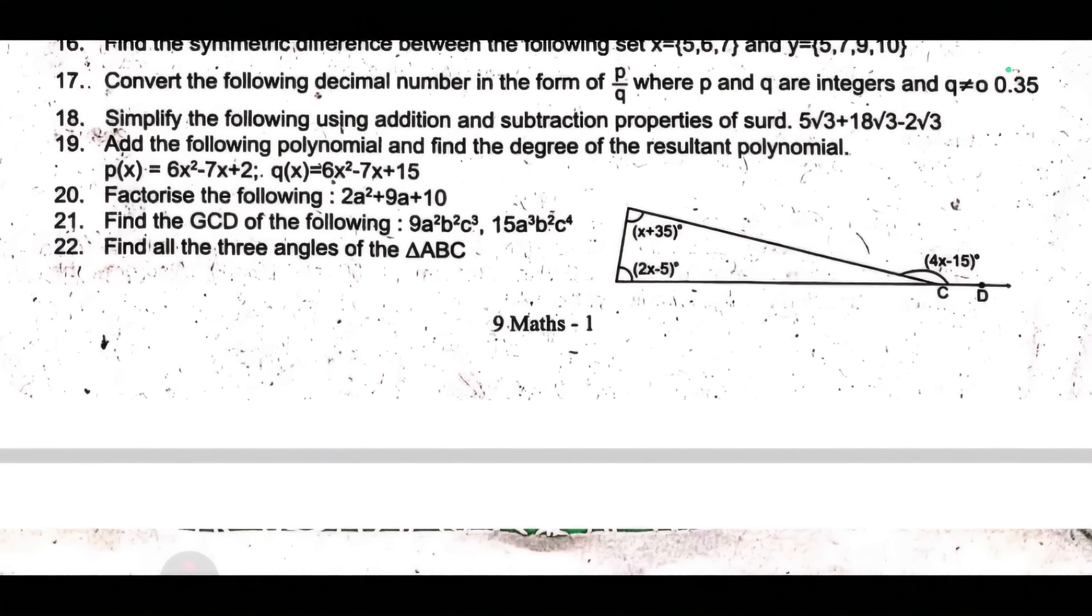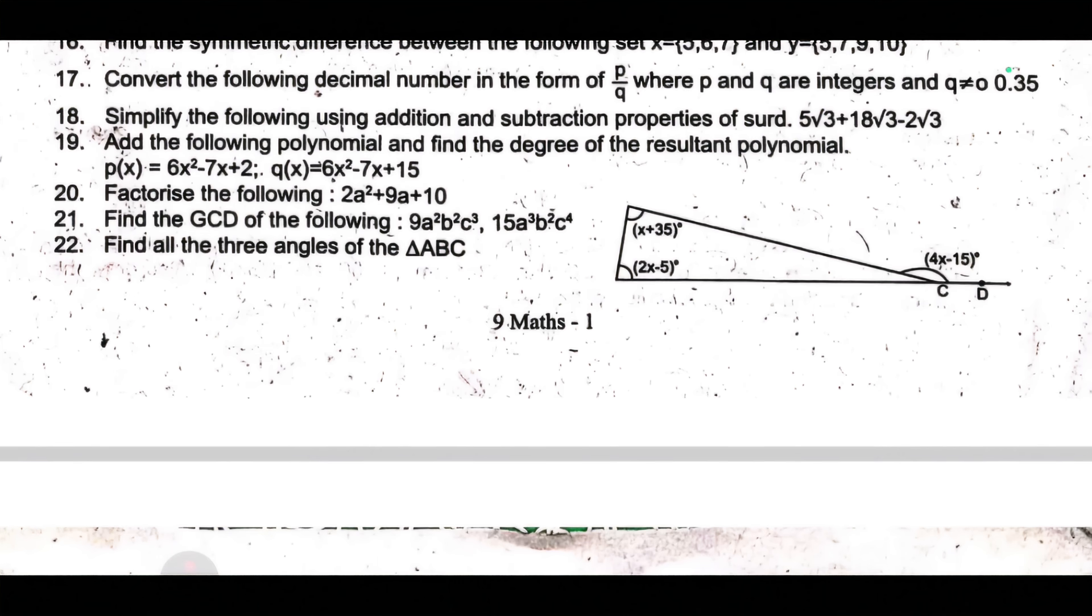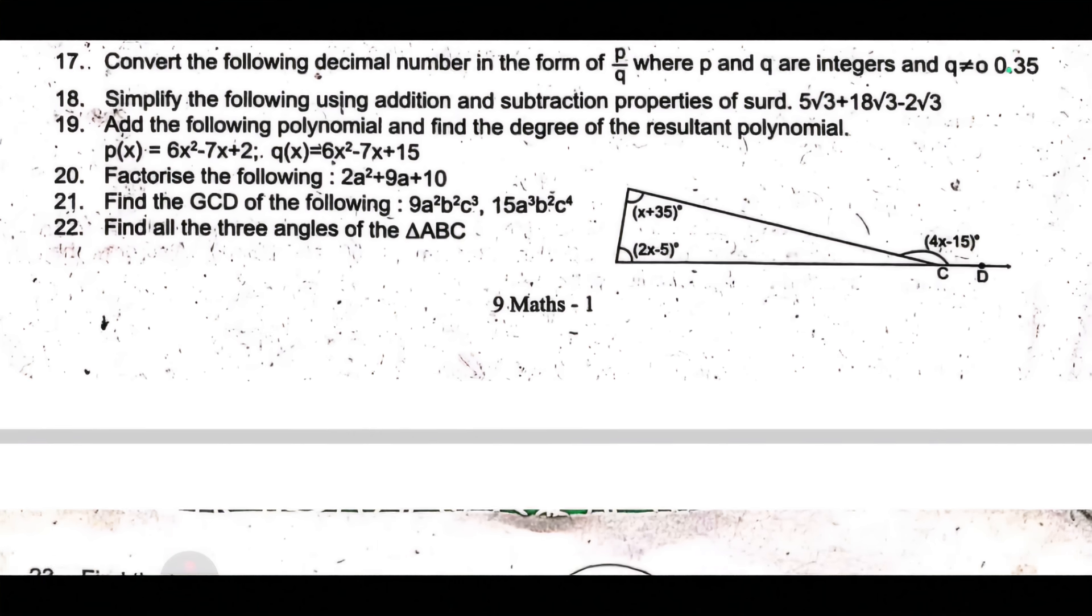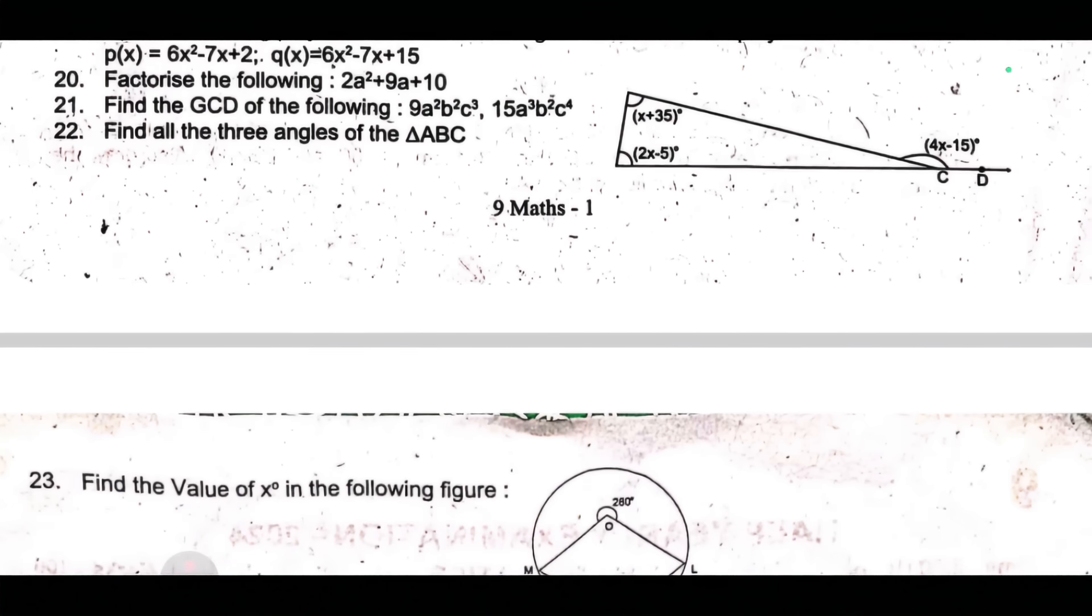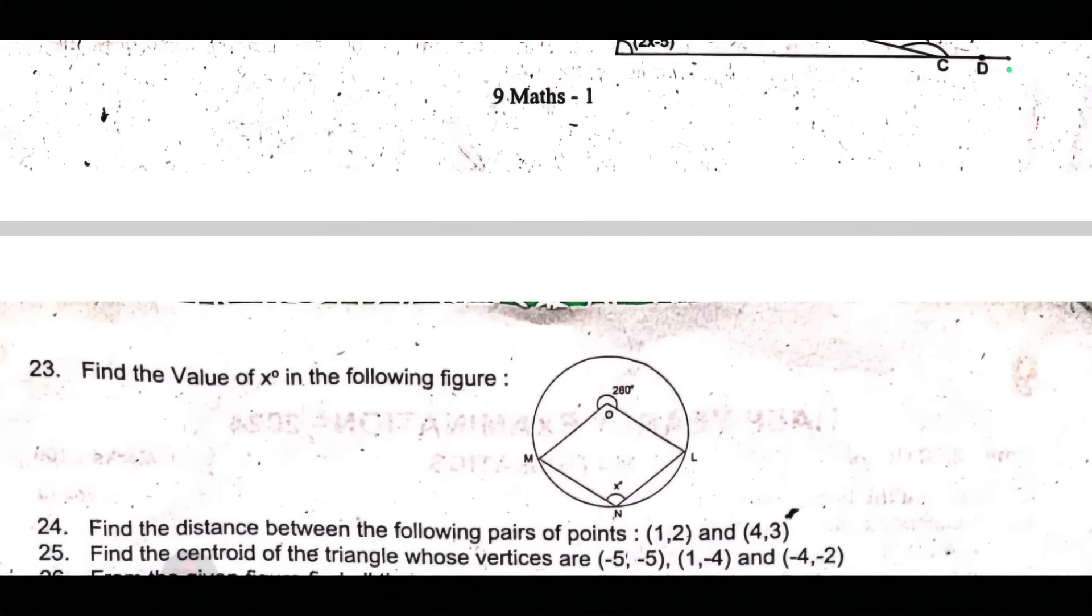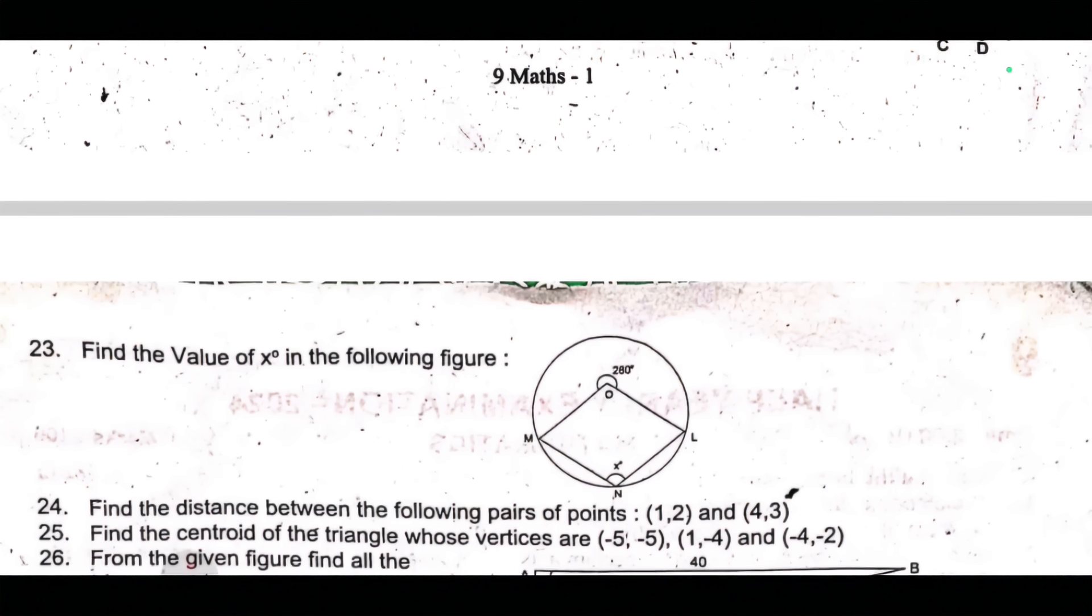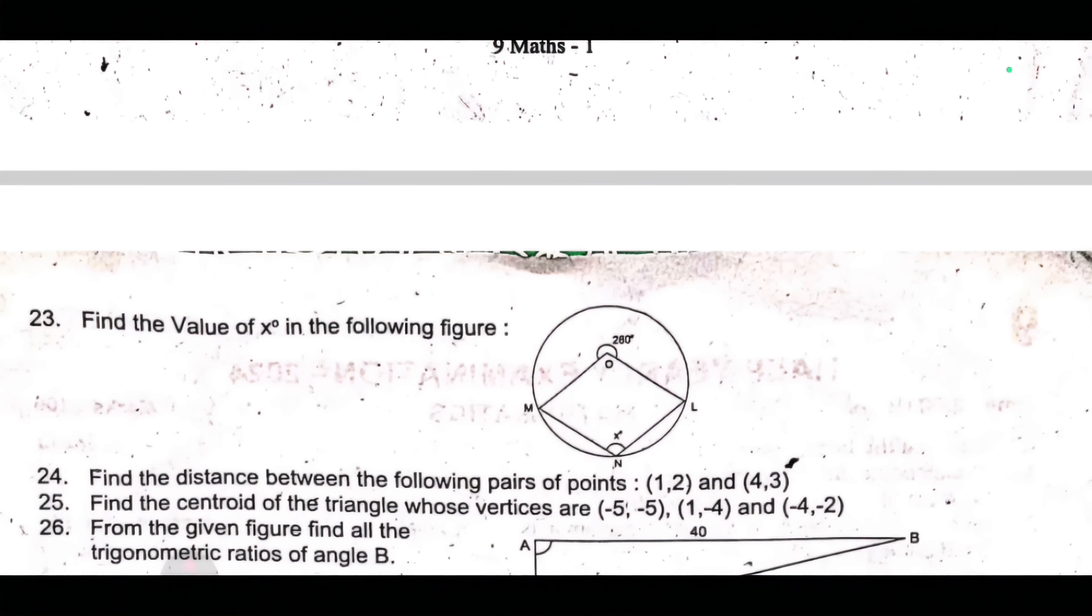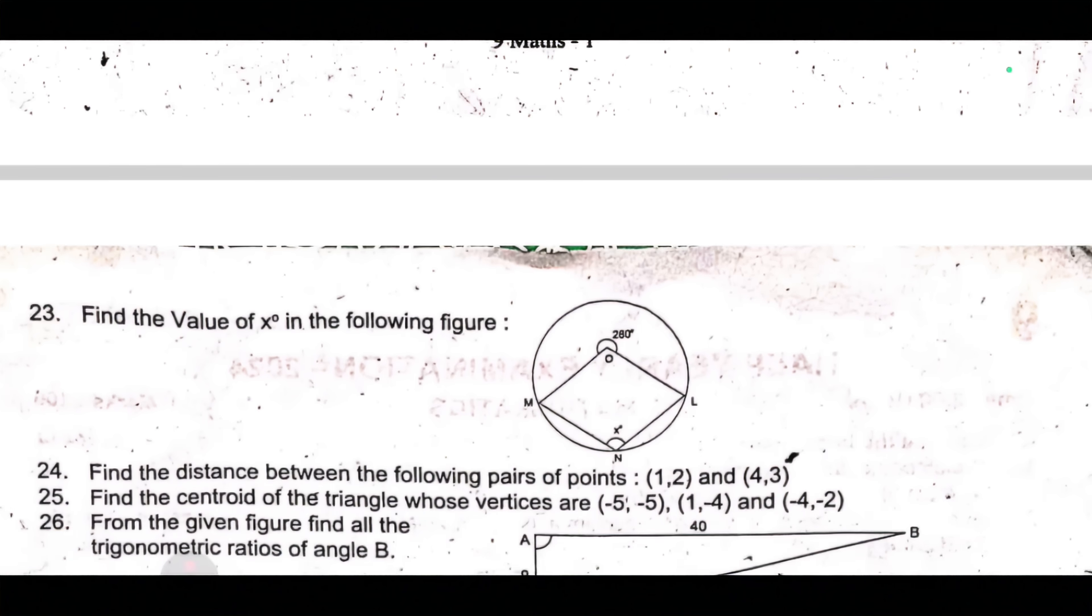Twenty-first, factorize the following: 2a² plus 9a plus 10. Next, twenty-first, find the GCD of the following: 9a²b²c, 15a³b²c⁴. Twenty-second, find all the three angles of the triangle ABC.